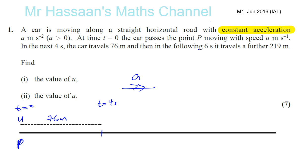So in the next six seconds, all together by this point, the time is going to be 10 seconds. Six more seconds, it's traveled 219 meters further. So we can say that the total distance it travels all the way from there to there, the end of this journey, the total distance traveled is 219 plus 76, which is 295 meters. So now we have to use this information to find what the initial speed U is and the acceleration is.